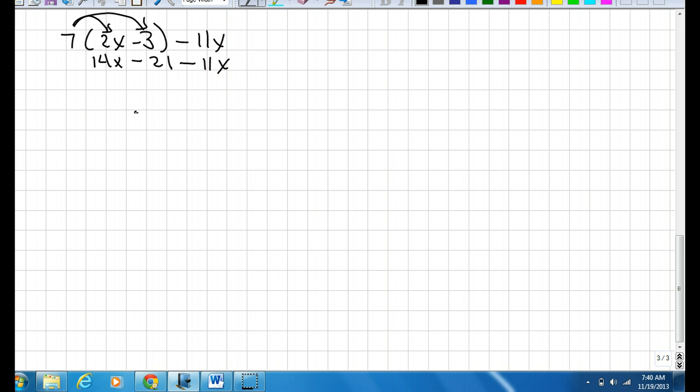Now to simplify this further, we need to make sure that we only put like terms together. You cannot add this x value to a non-x value. So what we need to do is find the other value that can go with that. So there they are. I'm going to put 14x minus 11x together. What I did here was move everything over and put it together. So 14x minus 11x is 3x minus 21, and that is my final answer for this.